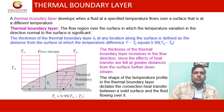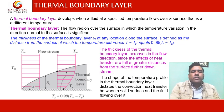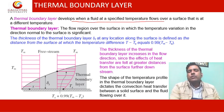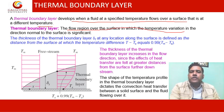What is the meaning of thermal boundary layer, and what is the difference between thermal boundary layer and a simple boundary layer in the context of convection heat transfer? A thermal boundary layer develops when a fluid at a specified temperature flows over a surface that is at a different temperature. The thermal boundary layer is a flow region over the surface in which the temperature variation in the direction of the surface is significant.